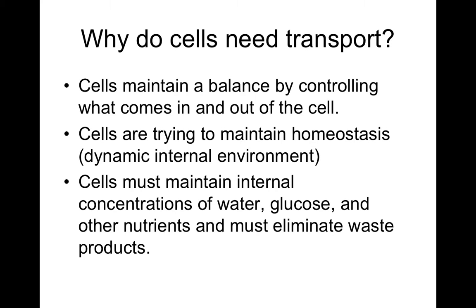Another example: if you were cold sitting in class, you might grab a blanket and pull it around you to warm up and get your body temperature back to where it needs to be. Homeostasis is a dynamic internal environment — dynamic because it's always changing, but always close to a set point. Cells must maintain internal concentrations of water, glucose, and other nutrients, and also eliminate waste products they don't need. This is why cells need to be selectively permeable — letting water and glucose in frequently and keeping things they don't need out.